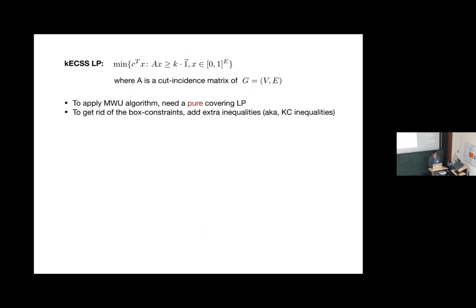Now what is the KCSS LP? It's a covering LP where A is the cut incidence matrix — you want every cut to be covered at least K times. But there's a box constraint that you're not allowed to use multiple copies of an edge. To apply the multiplicative weights algorithm, we need a pure covering LP, so we need to get rid of the box constraints.